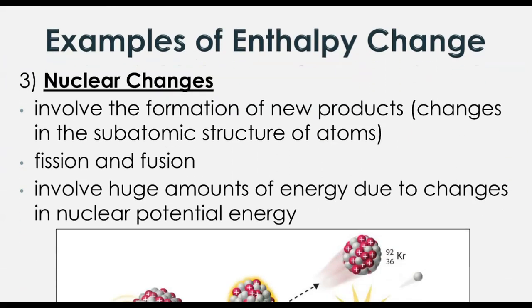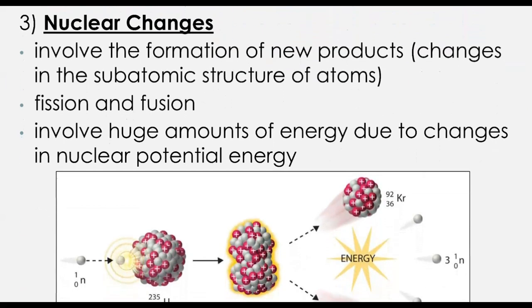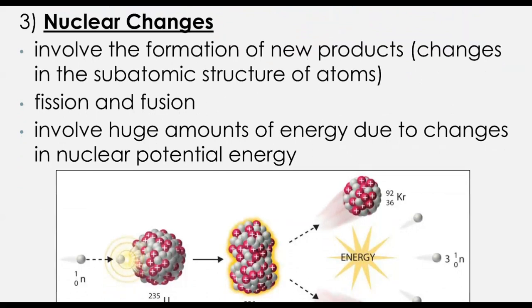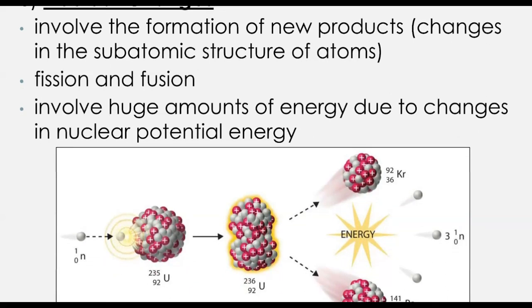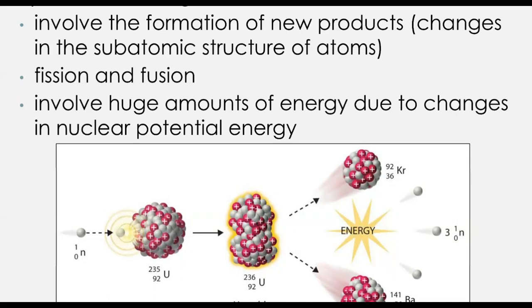The highest form of energy change comes from nuclear changes. We don't look at this too much in Chemistry 30, but basically with nuclear changes, we're looking at the strongest force — the force holding together the nucleus, holding the protons and neutrons together. When those forces are broken apart, because they are much, much stronger bonds than what we see in phase changes or chemical changes, it's incredibly high energy, resulting in the largest amounts of energy we see.